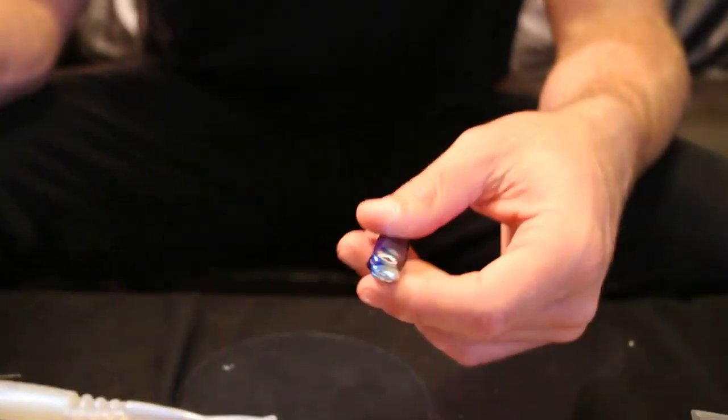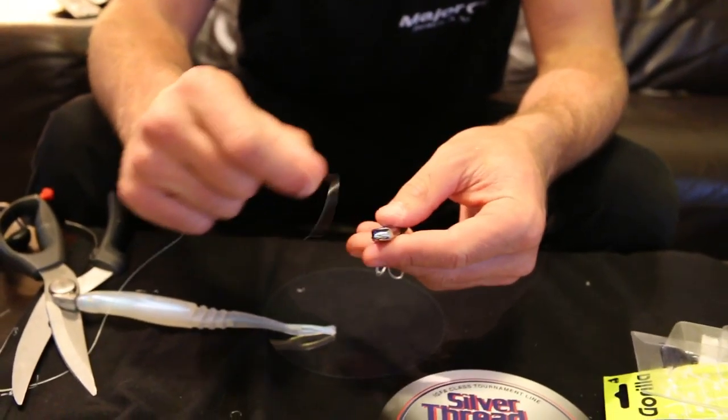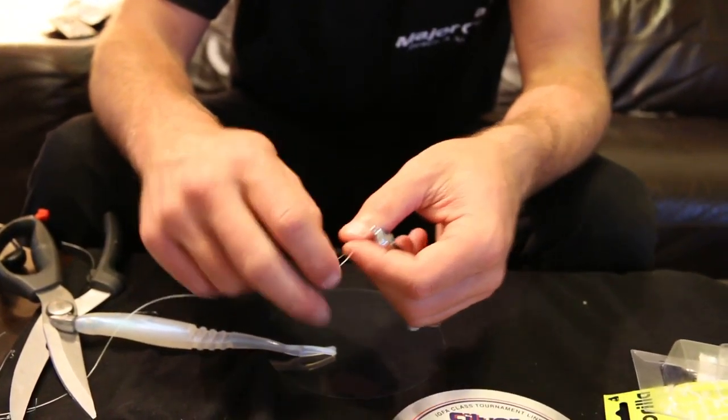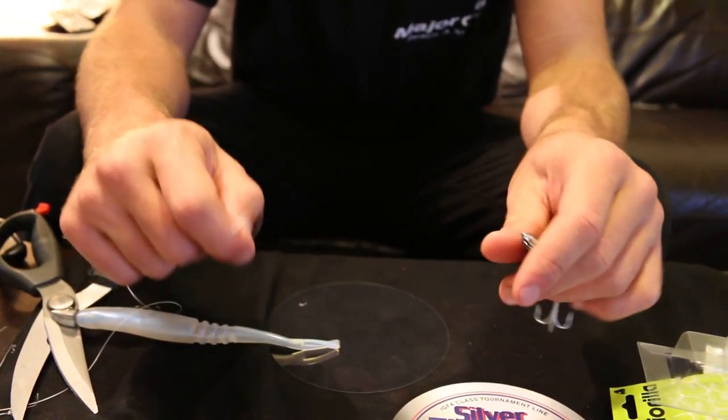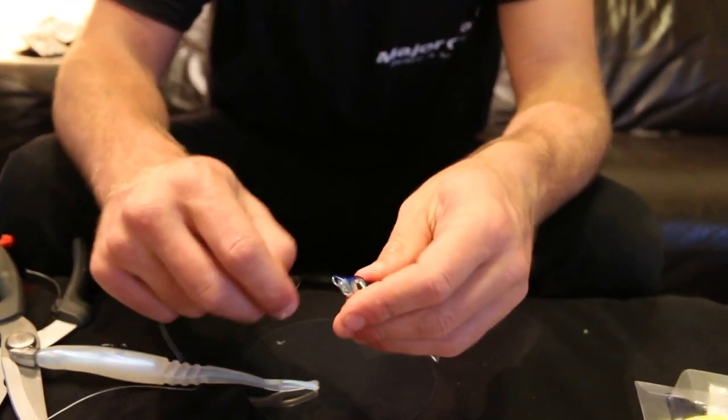I'm going to use a uni knot, but my version of it. I go through the eyelet twice so that toothy critters don't get the opportunity to bite off the leader as much as they would if it just went once.